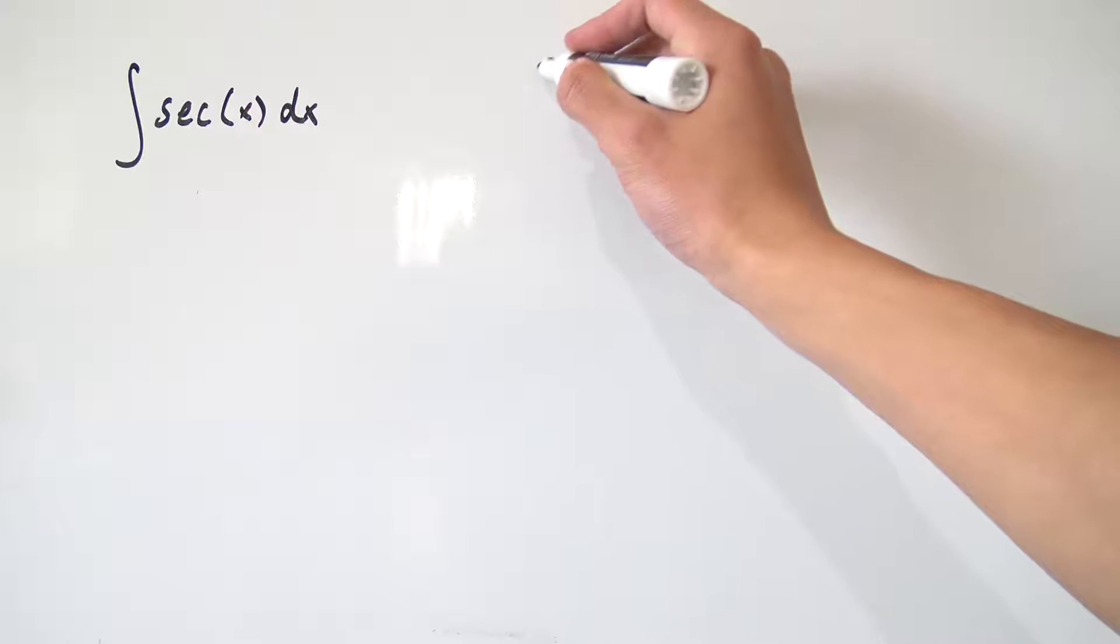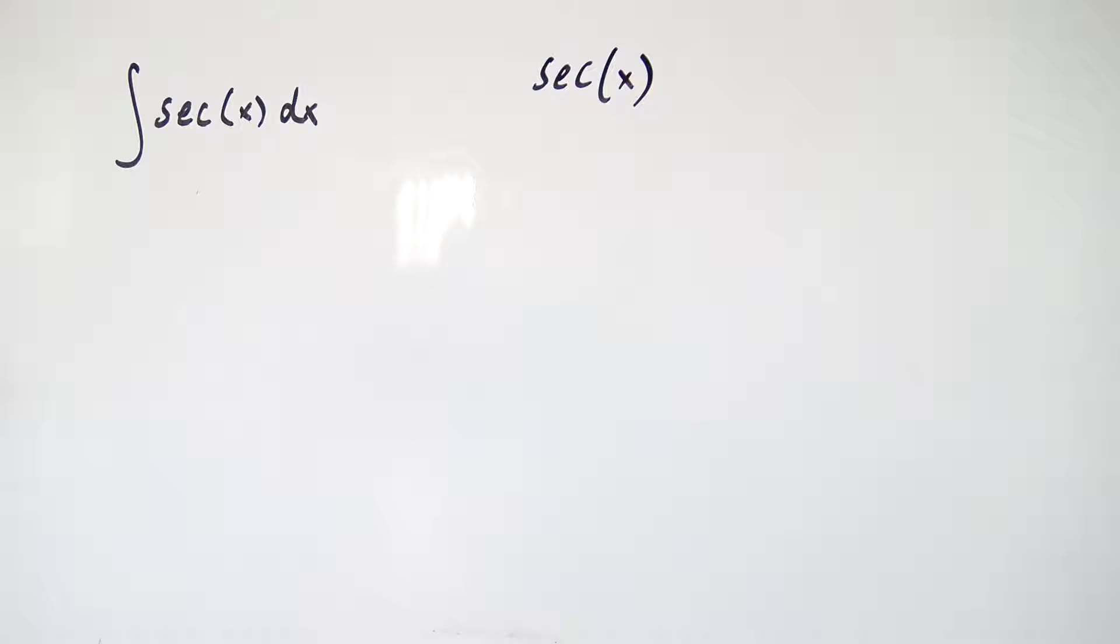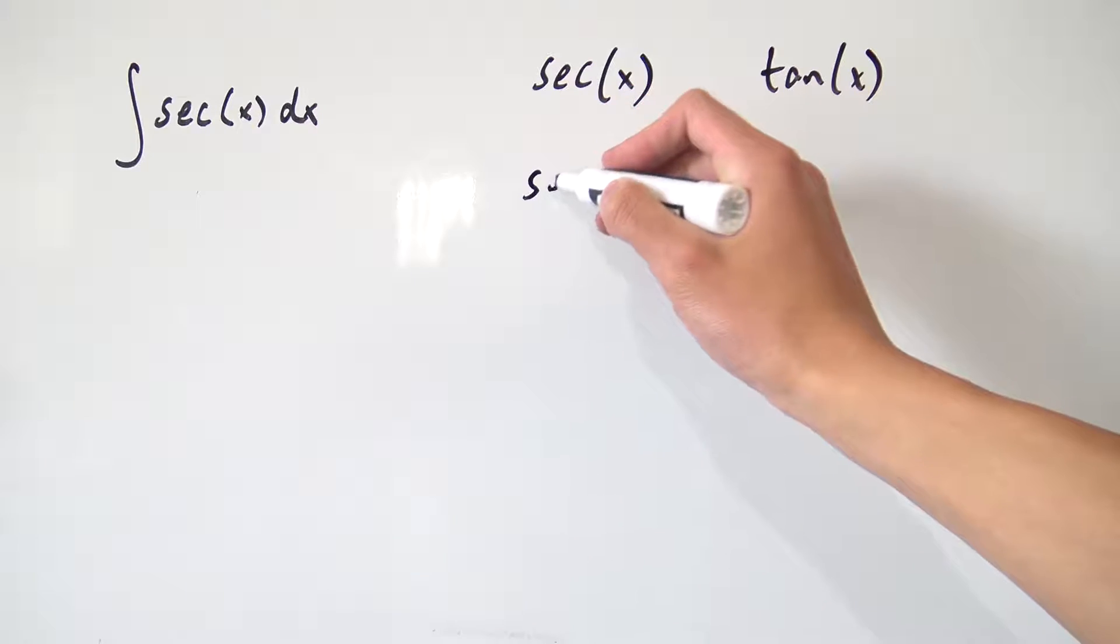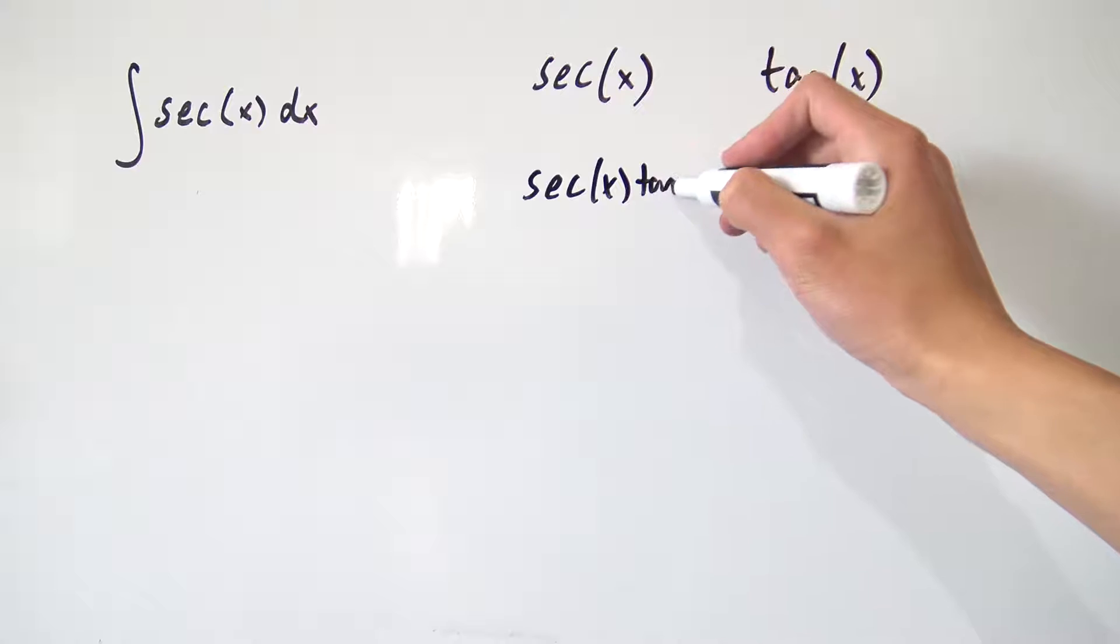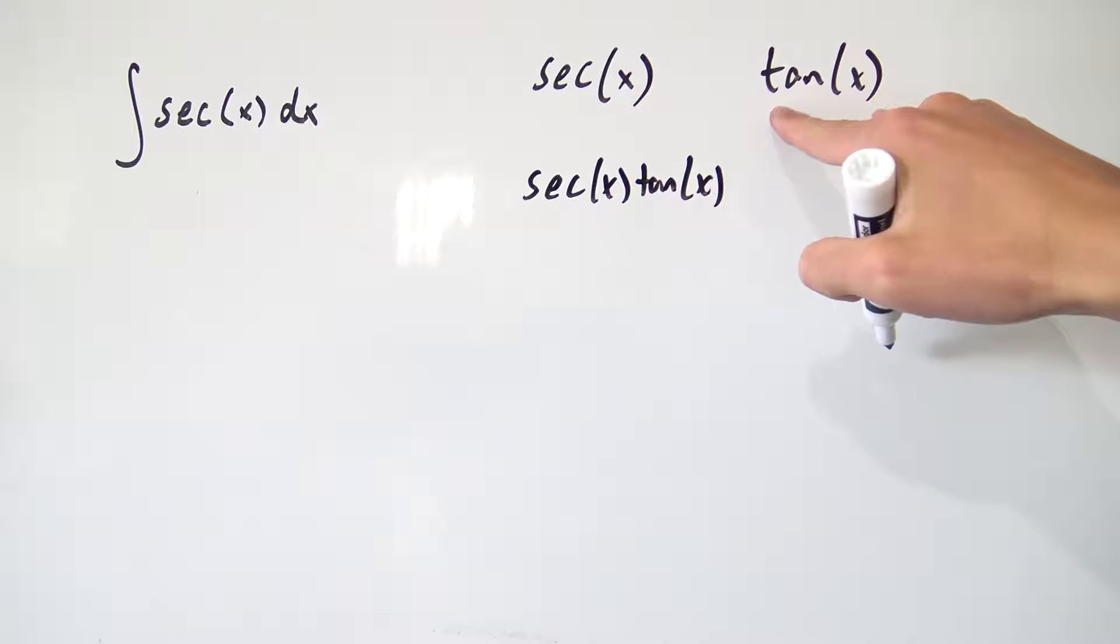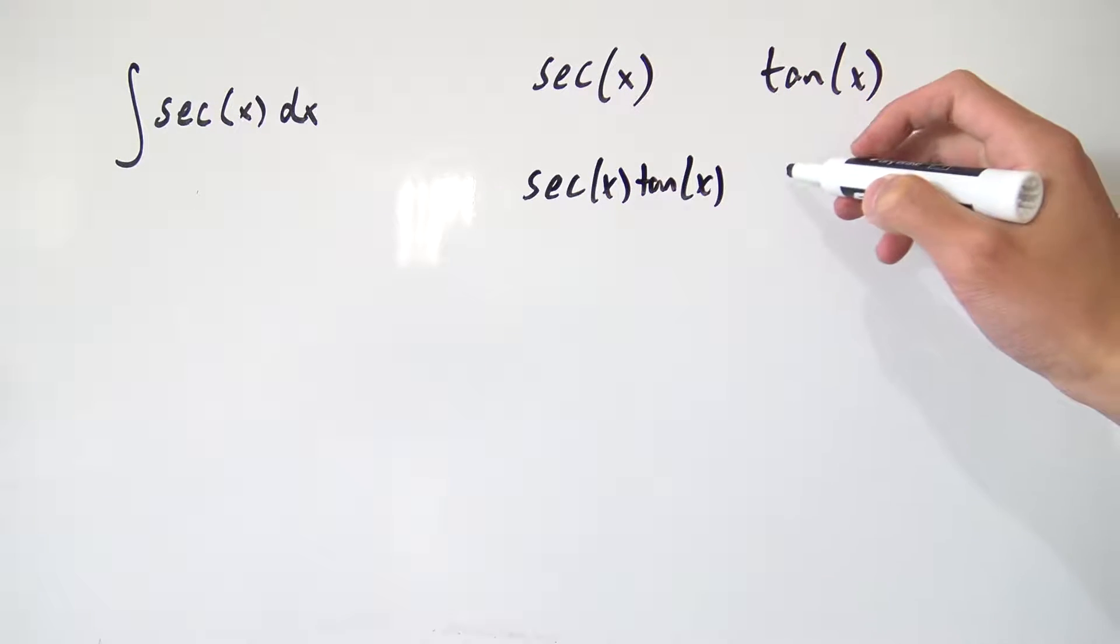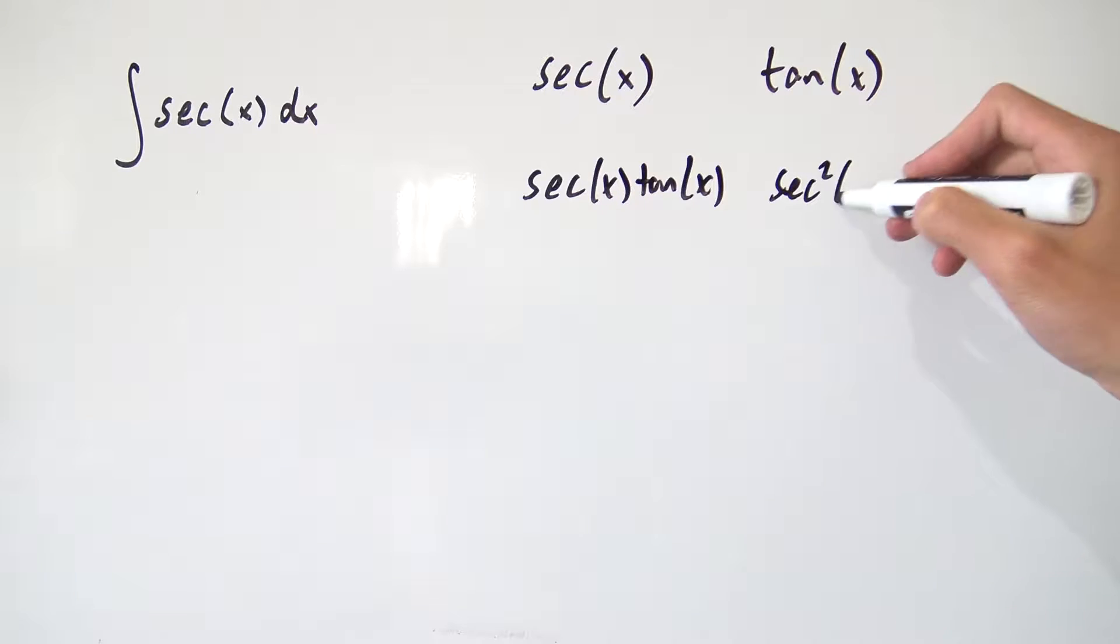So let's take secant of x first of all. And it's a nice function that usually goes along well with secant of x. It's actually the function tangent of x. And let's actually differentiate both of these functions. So if you differentiate secant of x, what you're going to get is secant of x times the tangent of x. And if you differentiate the tangent of x, you're going to get the secant squared of x.